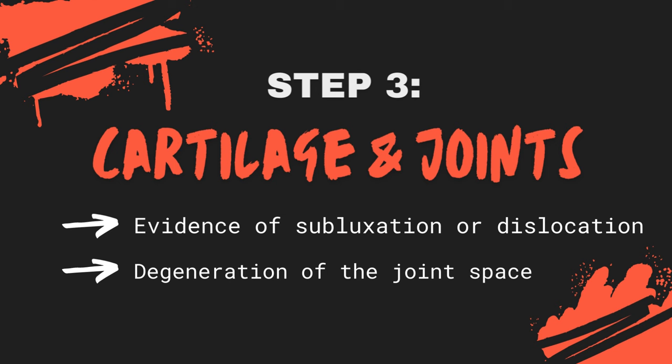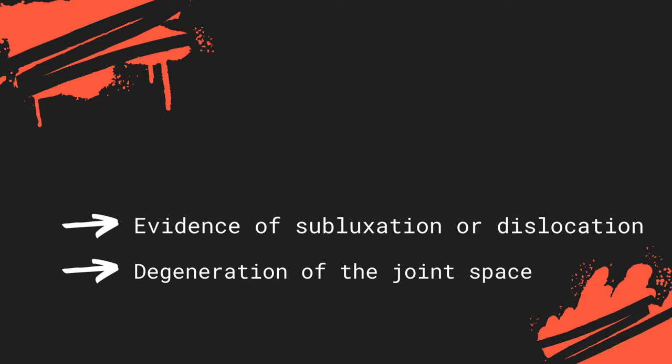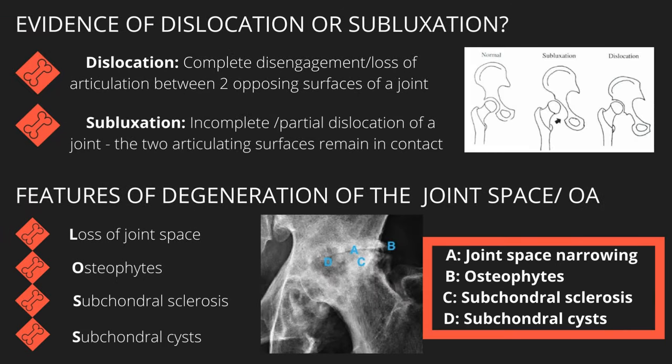The C of the ABCS approach refers to cartilage and joints, prompting you to look for any subluxation or dislocation of the joints and any degeneration of the joint space. A dislocation refers to the complete loss of articulation of two opposing bones comprising a joint, while subluxation refers to an incomplete or partial dislocation where the two bones remain in contact, though not completely. In terms of joint space degeneration, look out for features of osteoarthritis such as narrowing of the joint space, new bone formation with osteophytes on bone edges, subchondral sclerosis evidenced by hyperdensity of the bone, and subchondral cysts seen as hypodensities near the articulating surfaces.